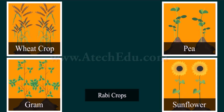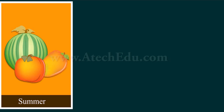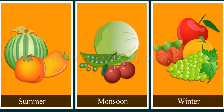Different fruits and vegetables are grown in different seasons, which is why we have seasonal fruits and vegetables in the market. For example, we have mangoes in summer and apples and oranges in the winter season.